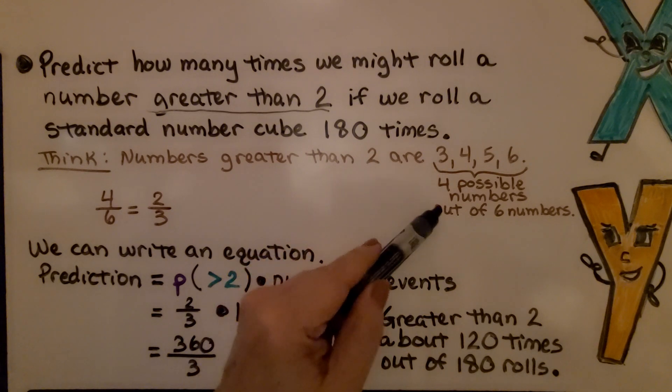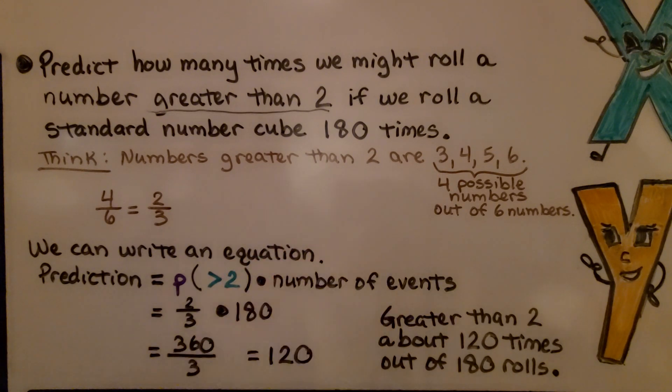That would be 4 possible numbers out of 6 numbers. 4 possible numbers out of 6 numbers would be 4/6, which simplifies to 2/3. We can write an equation.